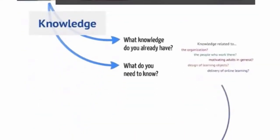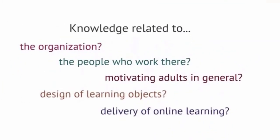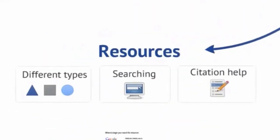First, ask yourself what knowledge you already have and what you need to know. Do you have knowledge related to the organization, the people who work there, or motivating adults? Do you need to know more about learning objects or online learning? Once you've determined the knowledge you need, it's time to consider what resources will help you get that knowledge. This is where library resources come in.